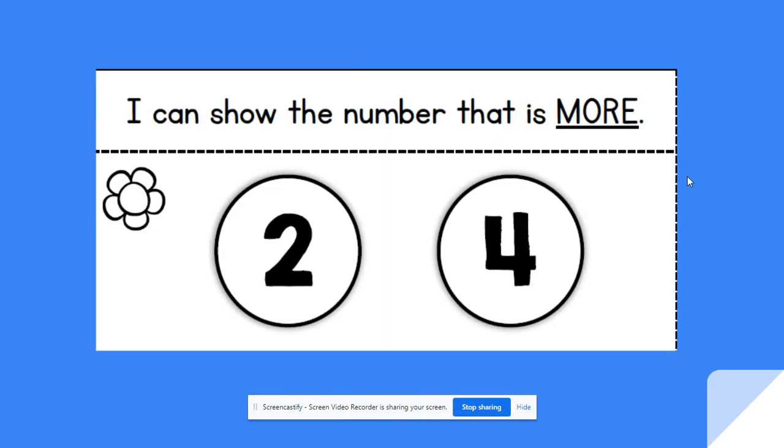So let's look at this. It says, I can show the number that is more. So think about which number is more. The number four is more than two. It's bigger than two or greater than two.